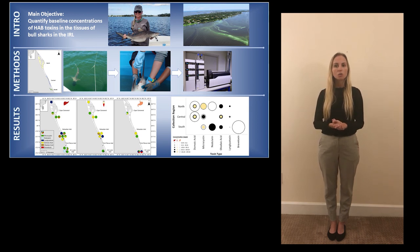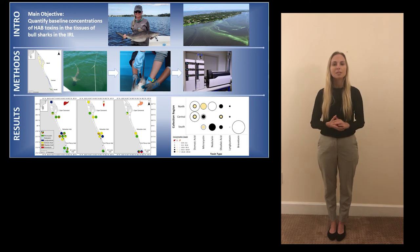Early analysis also shows that higher concentrations were found in the stomach content samples compared to the other tissue types. This can be seen in the graph to the right and what it suggests is that bull sharks are ingesting HAB toxins from their prey items.